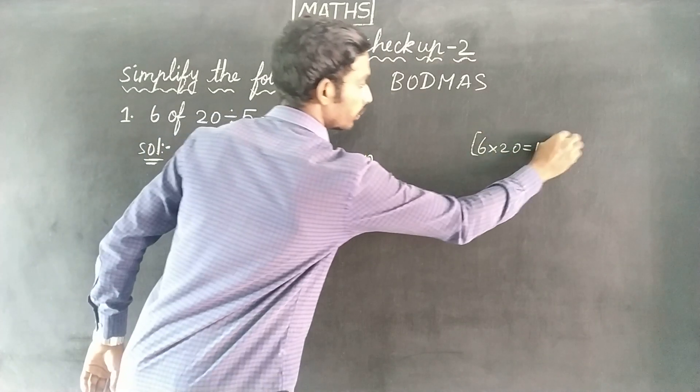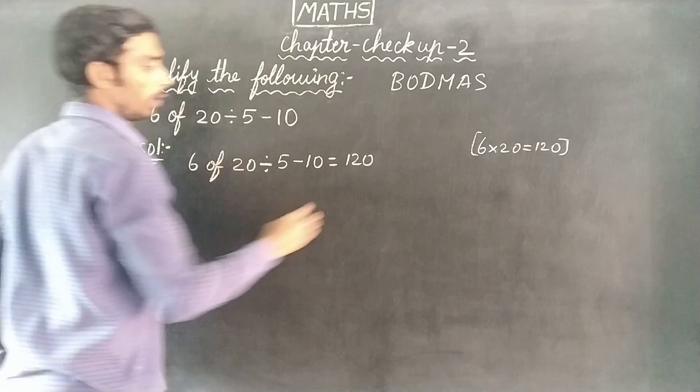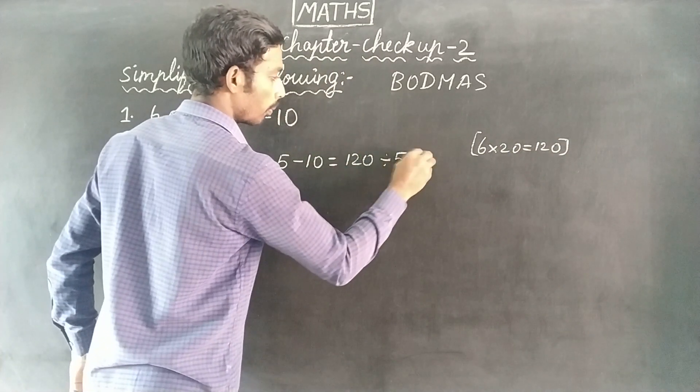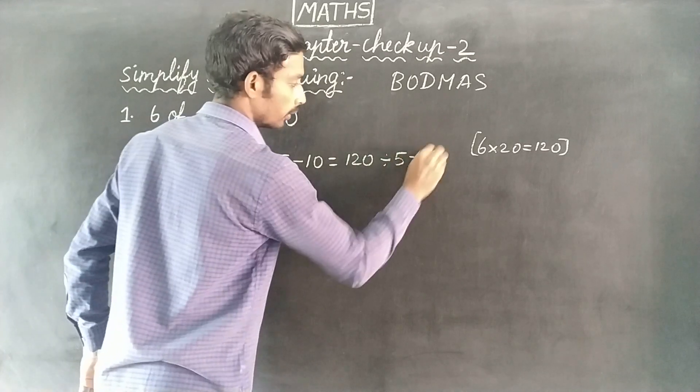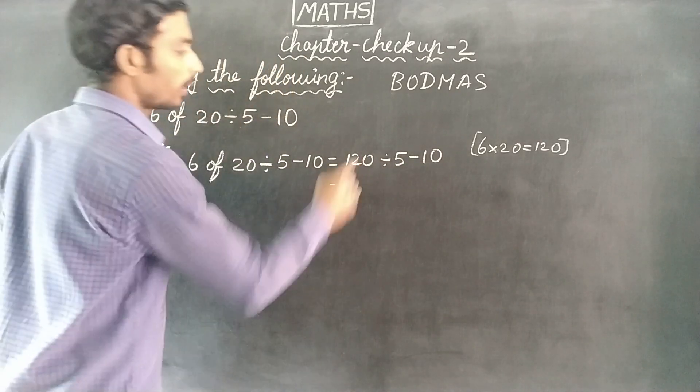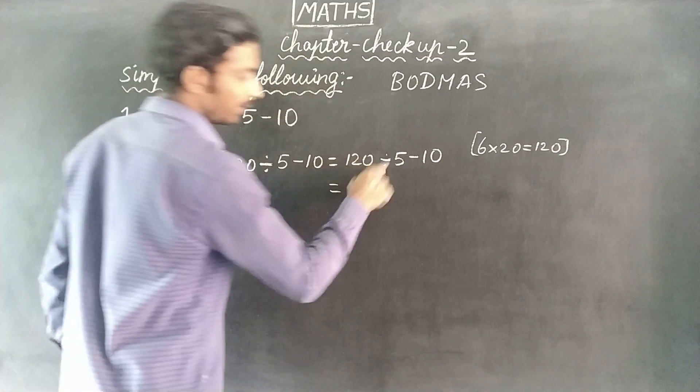division. 5 minus 10. So we will multiply. Next, division, subtraction.